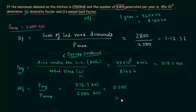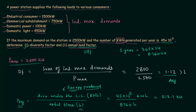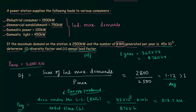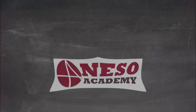The percentage plant load factor is 20.5 percent. This is the answer for the second part, and 1.12 is the answer for the first part. In this way you can calculate the diversity factor and the annual load factor for a given power station over 365 days. Thank you.